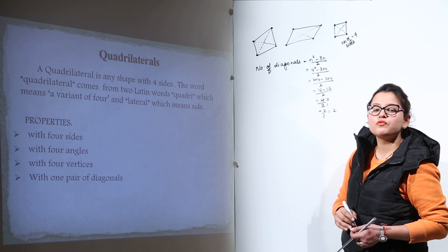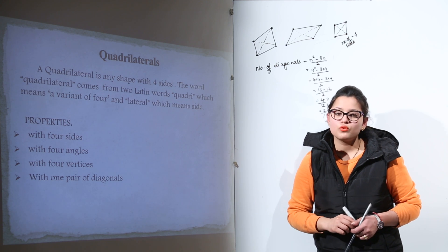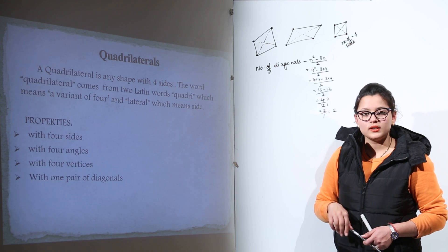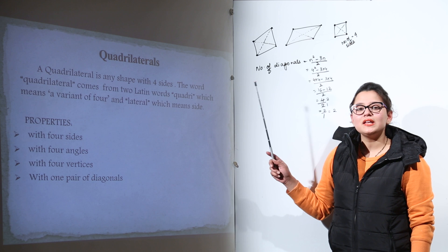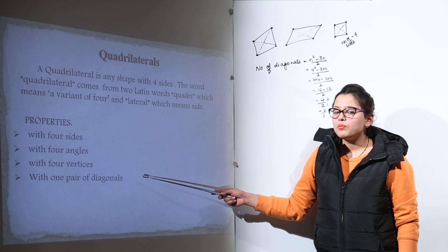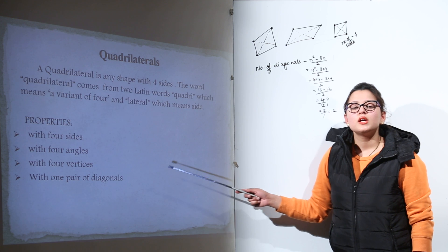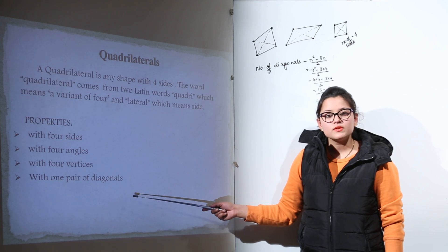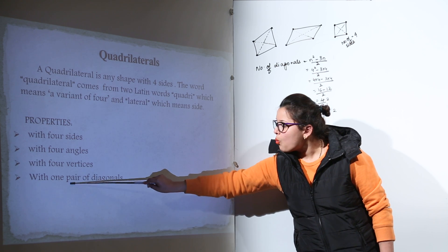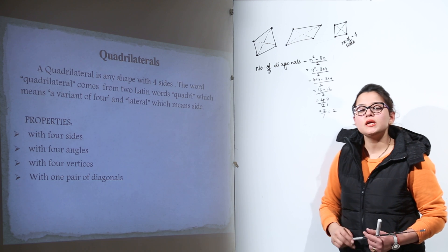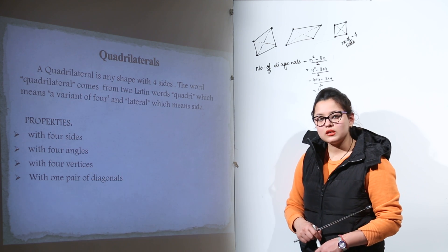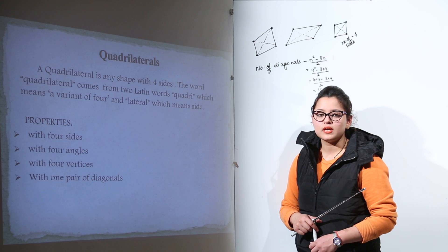That means for any four-sided polygon, which is a quadrilateral, the number of diagonals possible is 2. You can say 2 diagonals or 1 pair of diagonals will be possible for each quadrilateral.